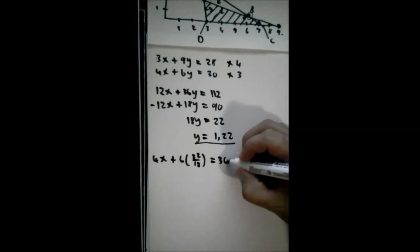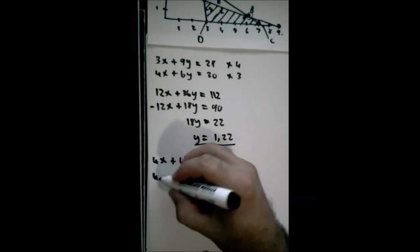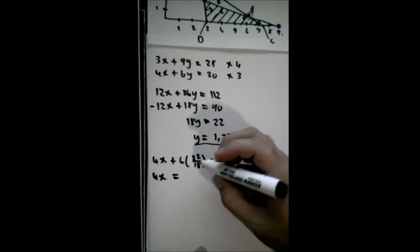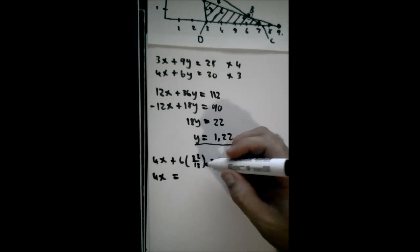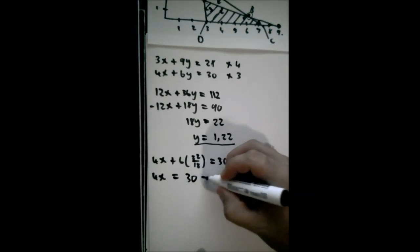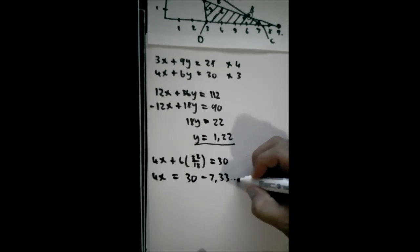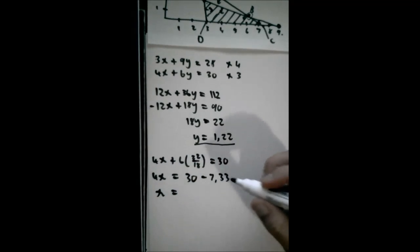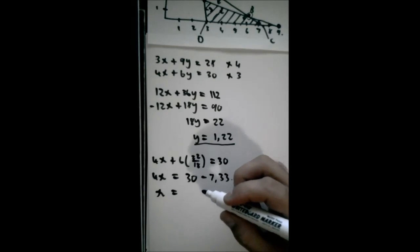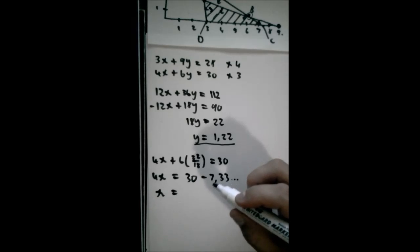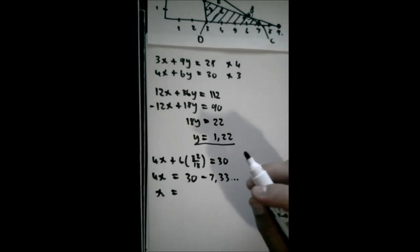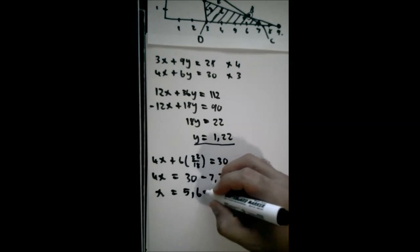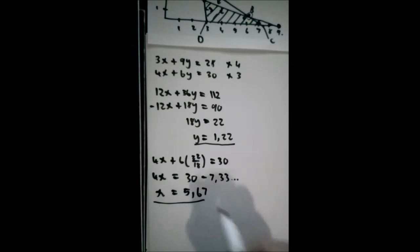Now, let's see what the x coordinate will be. We'll substitute this y value back into equation 2. That gives us 4x plus 6 times 22 over 18 equals 30. So 4x equals 30 minus 7.3 recurring. Then x is equal to 22.6 recurring divided by 4, which gives us 5.67 approximately.